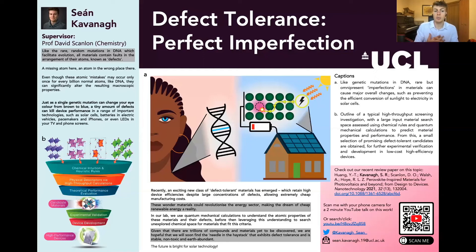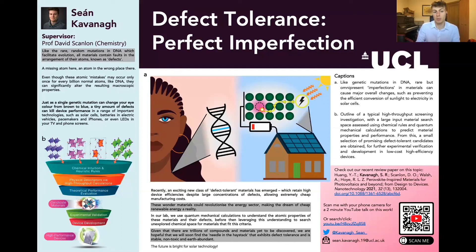In our lab, we use quantum mechanical calculations to understand the atomic properties of these materials and their defects, before then leveraging this understanding to search unexplored chemical space for materials that fit this criteria, as depicted in this diagram here on the left. Given that there are trillions of compounds and materials yet to be discovered, scientists are hopeful that we will soon find the needle in the haystack that meets these requirements. We've recently published an article on this topic, so if you're interested please check it out — and thank you for your time and attention.